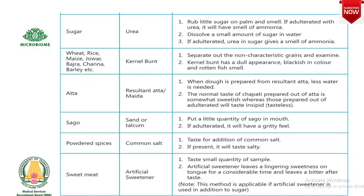For sago adulterated with sand or talcum: put a little quantity of sago in the mouth; if adulterated, it will have a gritty feel. For powdered spices adulterated with common salt: taste for saltiness — if salt is present, it will taste salty. For sweet meats adulterated with artificial sweetener: taste a small quantity; artificial sweetener leaves a lingering sweetness on the tongue for a considerable time and leaves a bitter aftertaste. This method is applicable if artificial sweetener is used in addition to sugar.